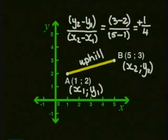Now there is a short way of indicating the words 'the gradient of the line segment AB.' We write M with a little AB next to it. So M of line AB is 1 divided by 4.